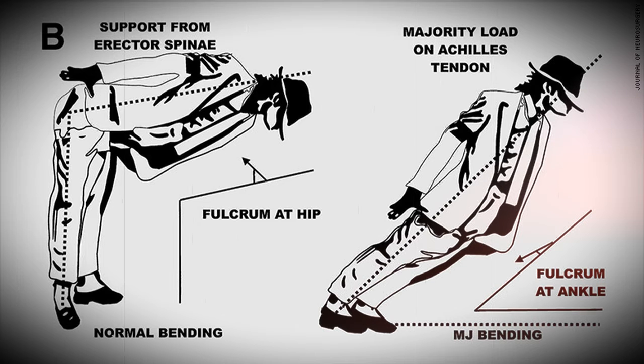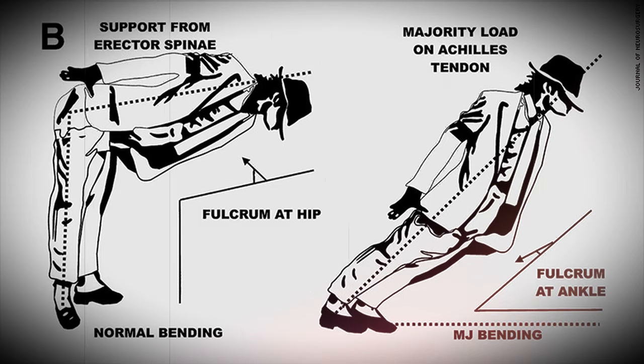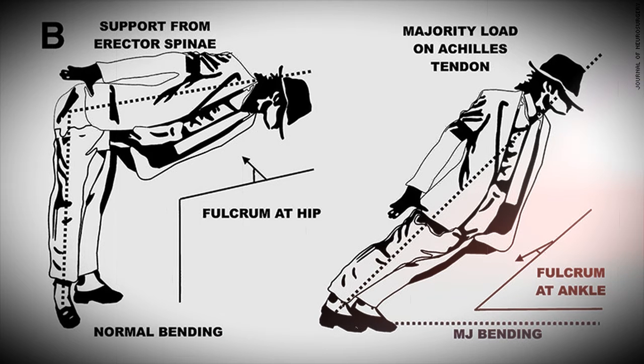But there's one move that stunned the watching world: the gravity-defying tilt he debuted in his 1988 music video for Smooth Criminal. In one scene, Jackson and a few of his dancers lean forward 45 degrees, back straight, feet flat upon the floor, and hold the pose until they return upright with little apparent effort.